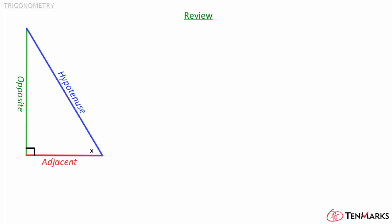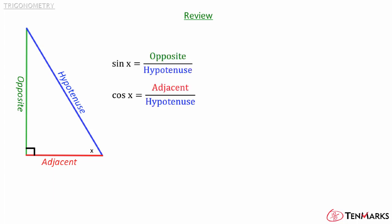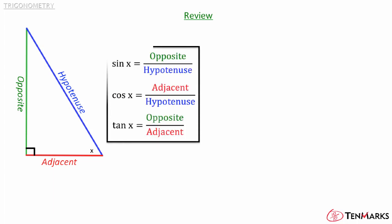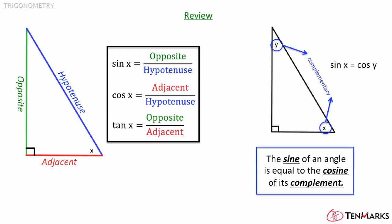So in review, sine, cosine, and tangent are trigonometric ratios that help solve for missing angles and sides of right triangles. Another important property in solving right triangles is that the sine of an angle is equal to the cosine of its complement.